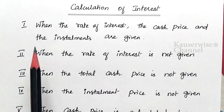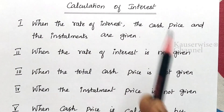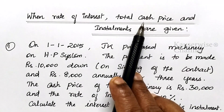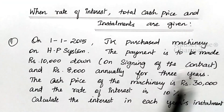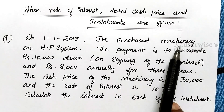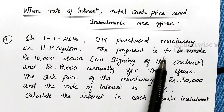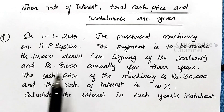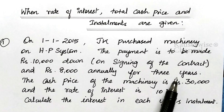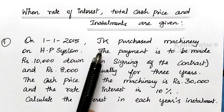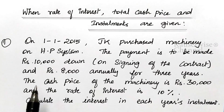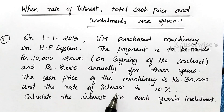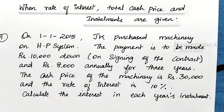Now let us see the problem for the first case — when the rate of interest, cash price, and installments are given. On 1st January 2015, JK purchased machinery on hire purchase system. The payment is to be made: 10,000 rupees down payment on signing of the contract, and 8,000 rupees annually for 3 years. The total cash price of the machinery is 30,000 rupees, and the rate of interest is 10%.